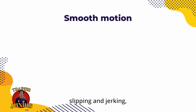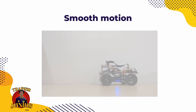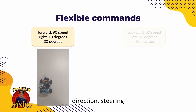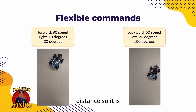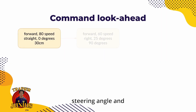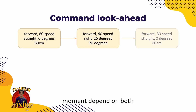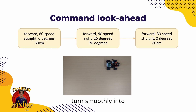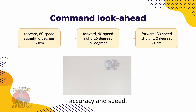To minimize wheel slipping and jerking, the robot will gently accelerate and decelerate to optimal PWM values. It accepts commands with flexible speed, direction, steering angle, and target distance, so it is capable of driving almost anywhere. Commands sent to the robot are queued, and the steering angle and motor speeds at any moment depend on both the current and next drive command. This allows the robot to turn smoothly into the next command without fully stopping, maintaining both accuracy and speed.